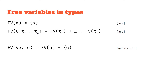The rules look something like this. For our three different production rules — type variables, type function applications, and quantifiers — we have a free variable rule. For a type variable, the free variables are just that type variable. For a type function application, it's the union of all the free variables in those type arguments. The only time we remove free variables is with the for-all quantifier, where we remove the quantified variable. These rules are very similar to those for lambda expressions: variables and applications are analogous, and the quantifier is very similar to function abstraction.